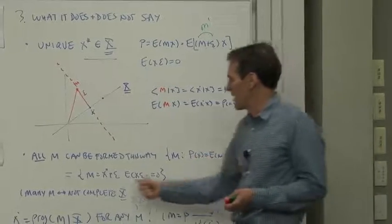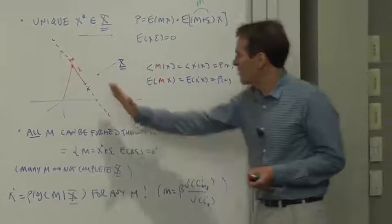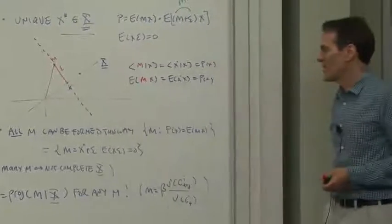any discount factor M is of the form M is X star plus some additional noise, where that noise is orthogonal to the payoff space X.